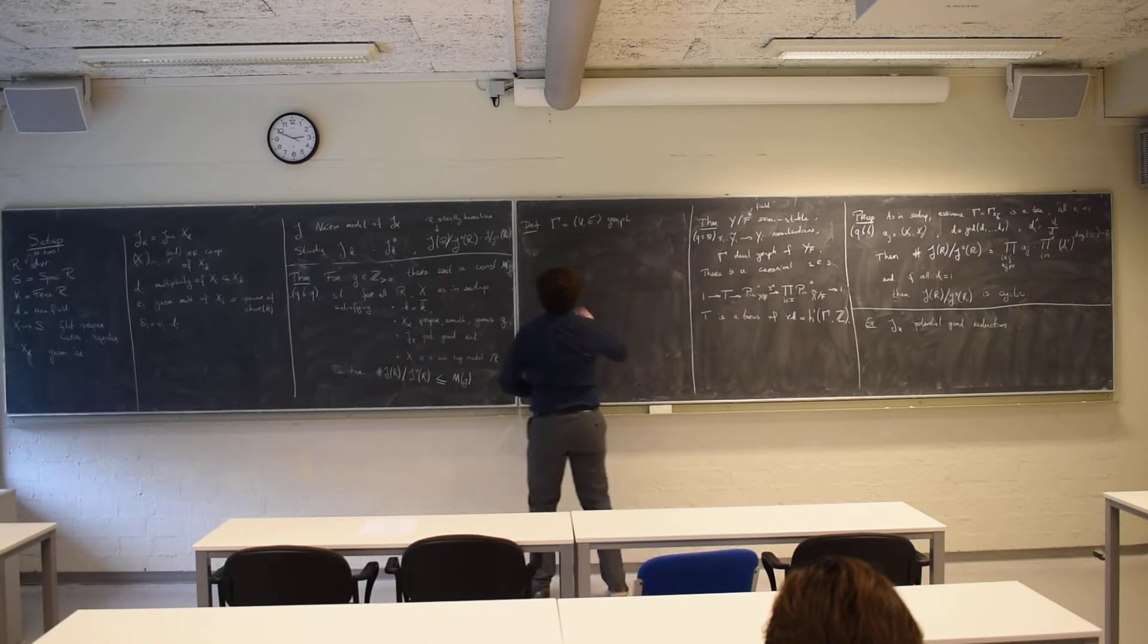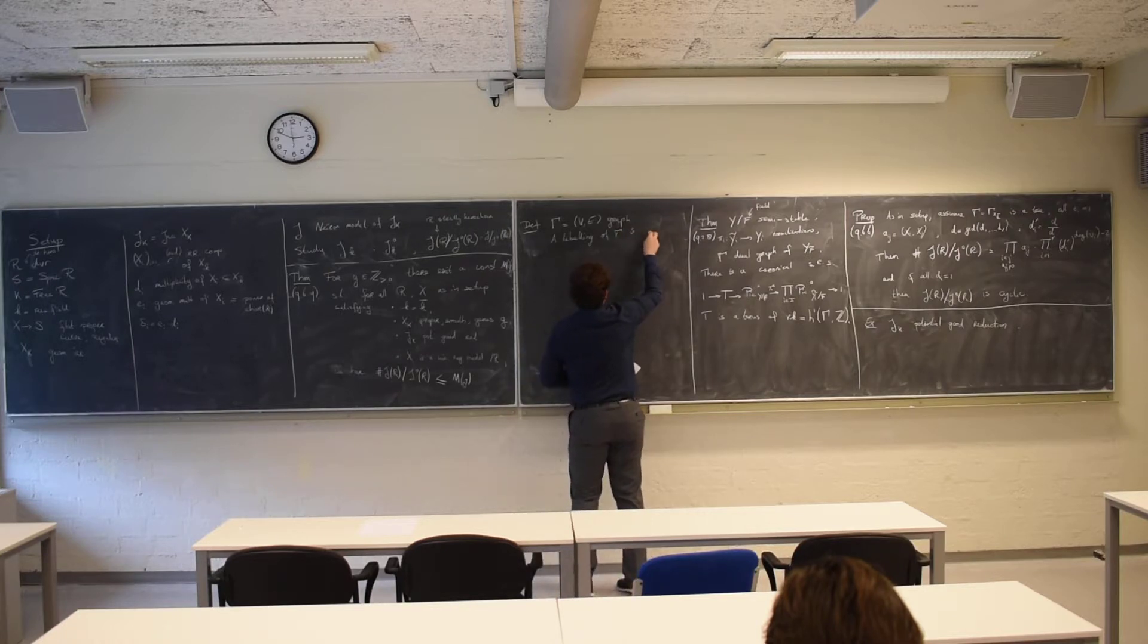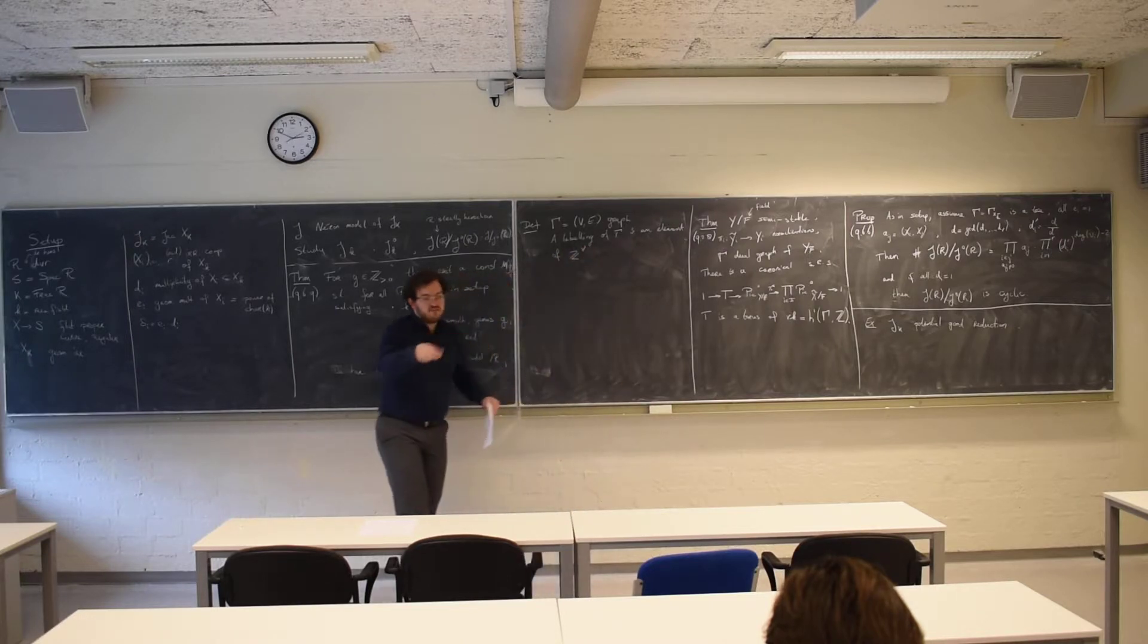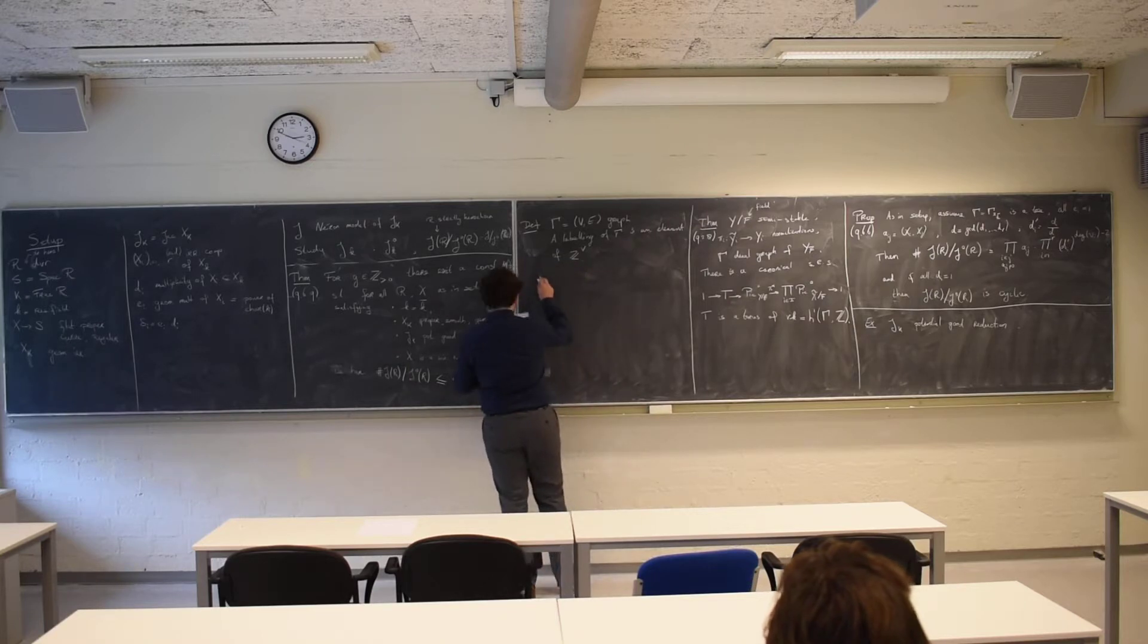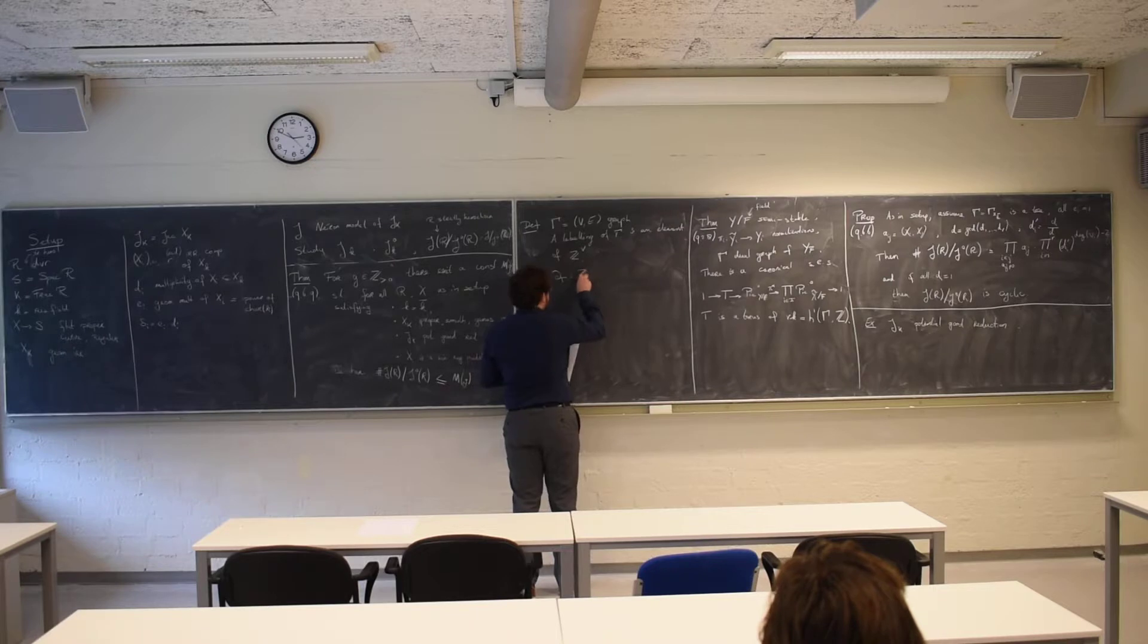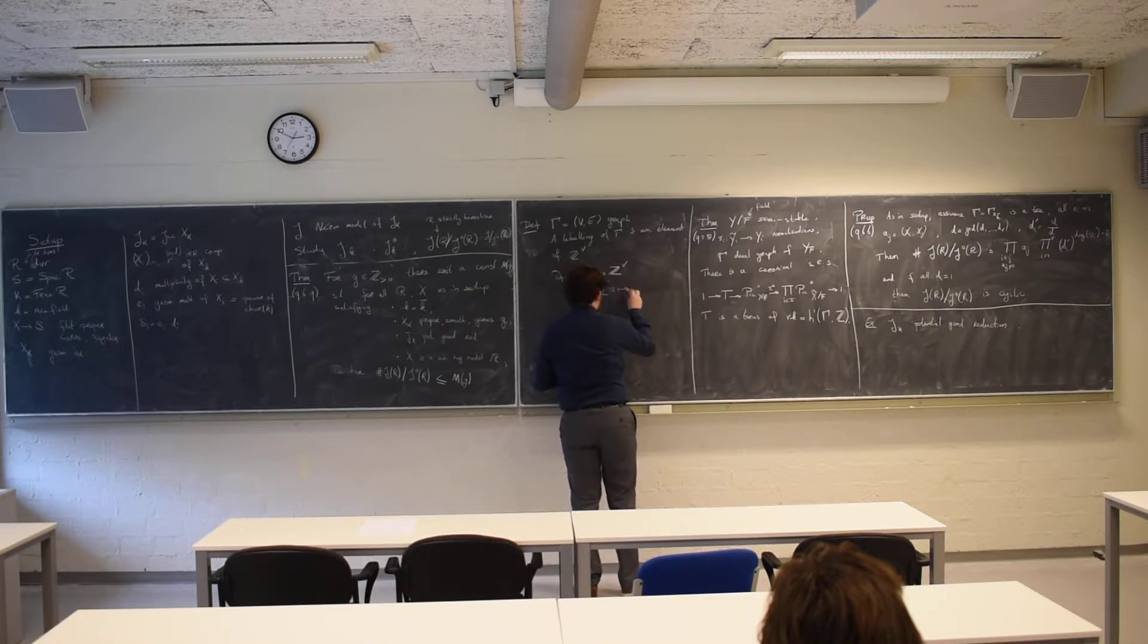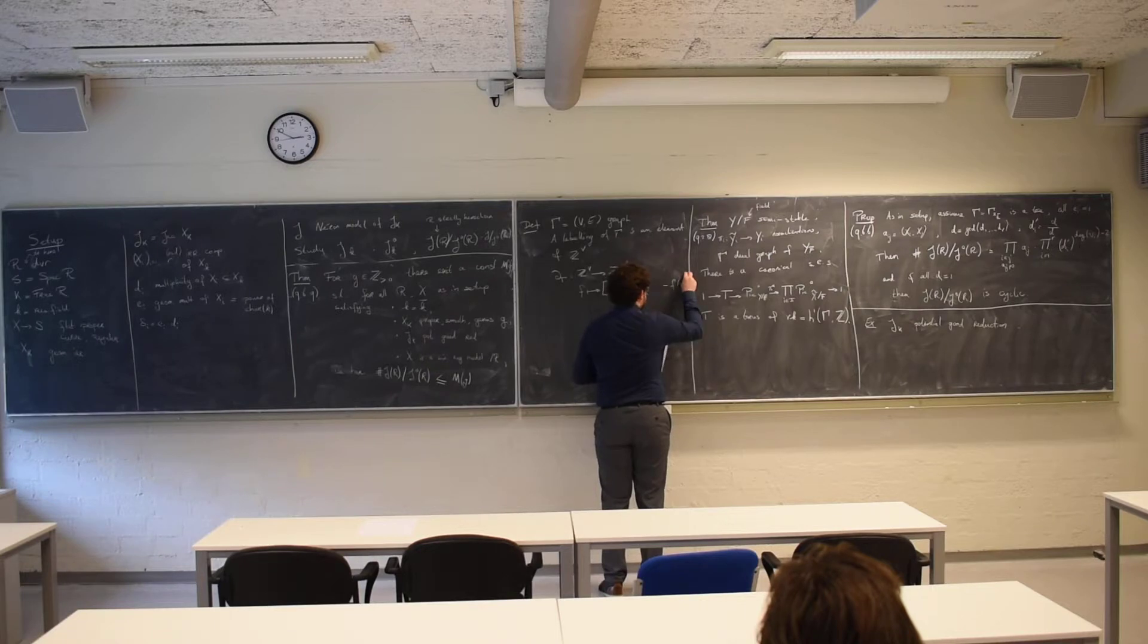And we say a labelling of gamma is an element of z to the power of v. So we give every vertex some label from z. That's one part of the definition. And in the second part, we define a map from zv to zv that will send a labelling to another one where we label the vertex v according to its own old labelling and the labelling of its neighbours.